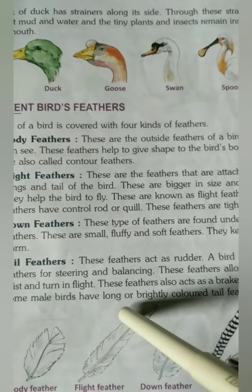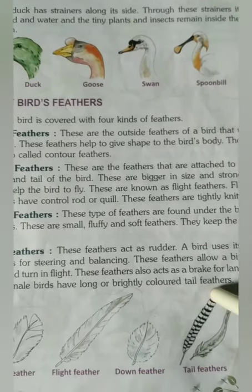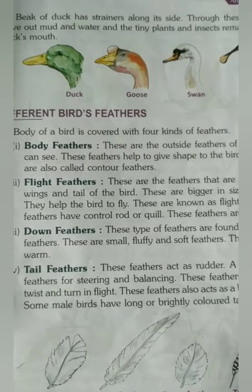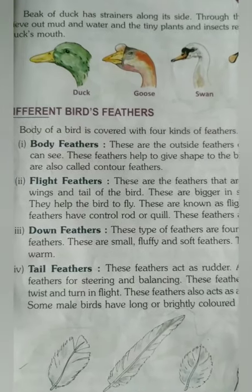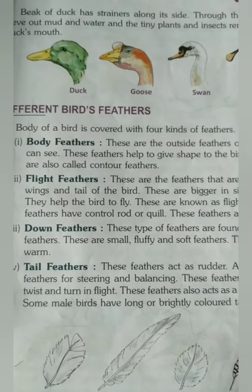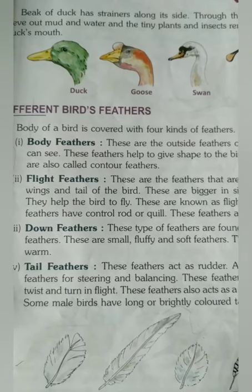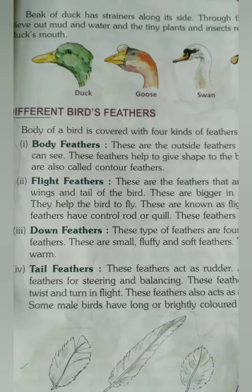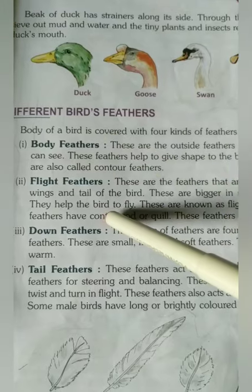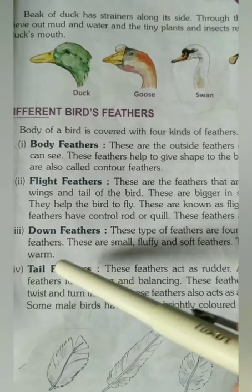Some male birds have long or brightly colored tail feathers. So to summarize, there are four types of feathers found in birds: the first is body feathers, the second is flight feathers, the third is down feathers, and the fourth is tail feathers.